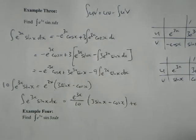E to the 3x over 10, times 3 sine x minus cos x, plus C obviously because integration. So that's integration by parts which went around twice, but the convenient thing is it came back to where I started when I went around twice.